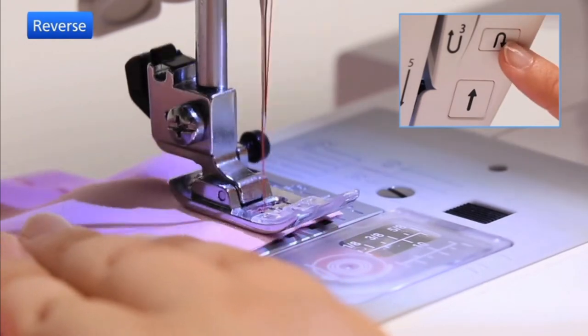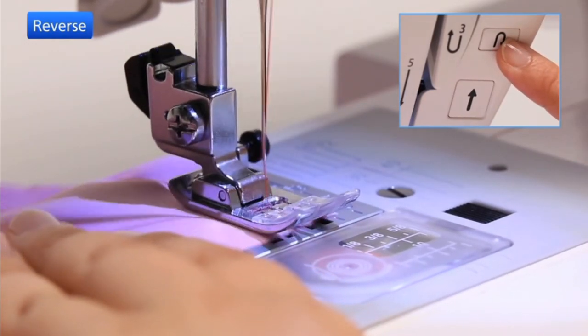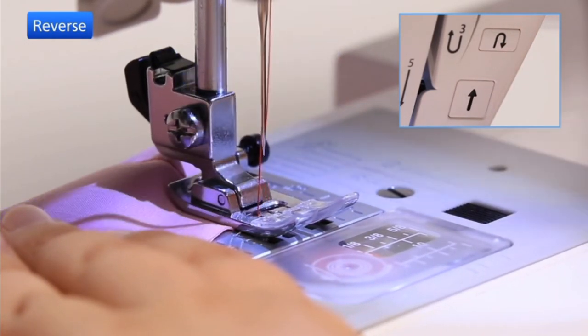Stop the sewing machine by releasing your foot from the foot control. To secure the beginning and end of the seam, press the reverse button and sew several reverse stitches.